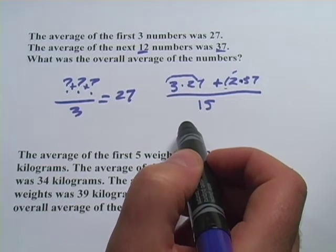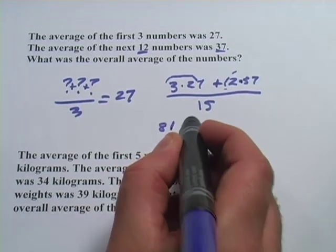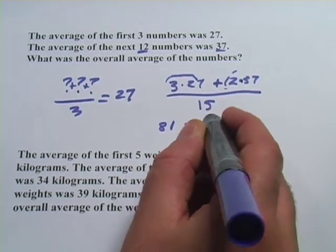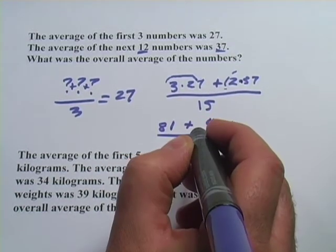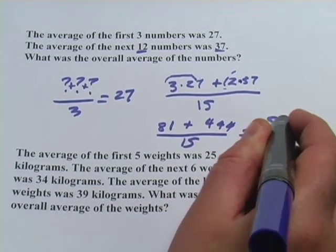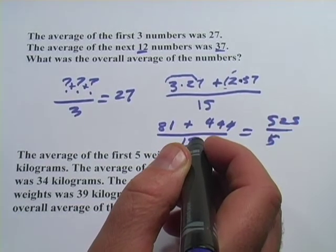All I have to do is crunch this. So 3 times 27, that's 81, and 12 times 37, that's 444 over 15, so that's 525 over 15, or 35.